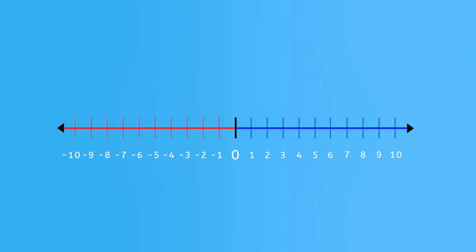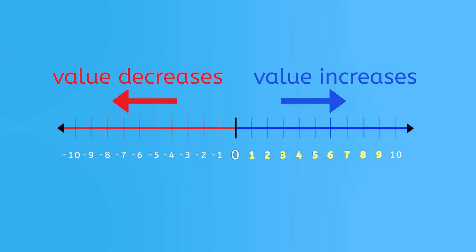Look at this number line. It shows how integers moving to the right increase or go up in value, and how integers moving to the left decrease or go down in value. Adding moves the number up or to the right, and subtraction moves the number down or to the left. This is the same, no matter which side of the zero you are. We can use this knowledge to help us add negative numbers.